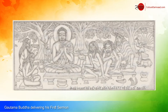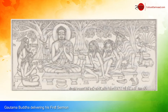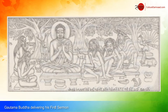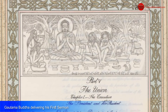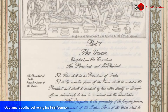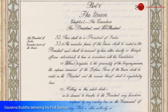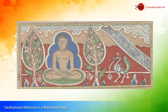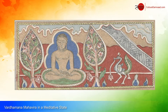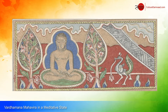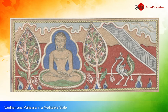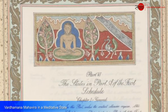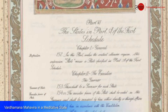An exquisite illustration of the enlightened Gautam Buddha delivering his trailblazing first sermon, the Dharma Chakra Pravartan Sutra, embellishes Part 5 of the Constitution, dedicated to the Union. Part 6 commences with a richly colored piece of art of the meditating Vardhaman Mahaveer — a paragon of non-violence and the last Tirthankara of our times.